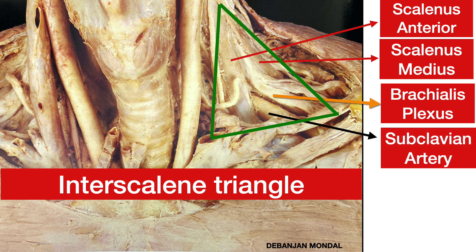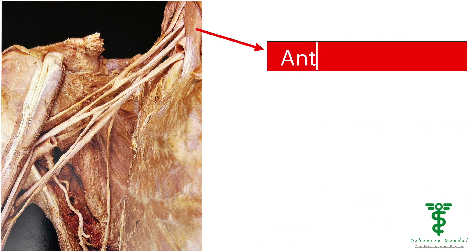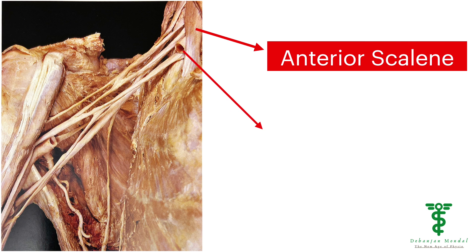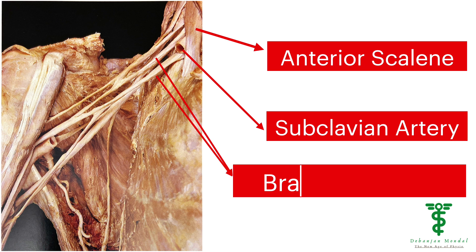If the Scalene Muscle becomes shortened, it can elevate the first rib and increase pressure in the Inter-Scalene Triangle, which can compress the roots and trunks of the brachial plexus and the subclavian artery. This can cause pain and weakness in the shoulder and neck, as well as numbness in the fingers.